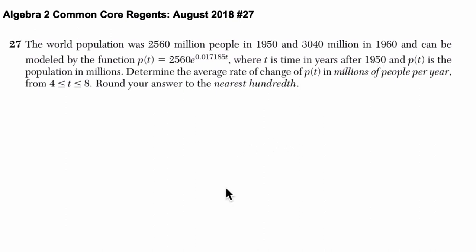Okay, so here we're starting to get to something I need to think about. It's years after 1950, that's what t is. So then in 1950, this is when t is zero. And then in 1960, well, that's 10 years after 1950, so t is 10.